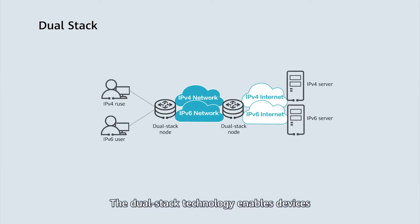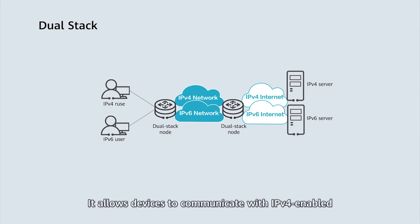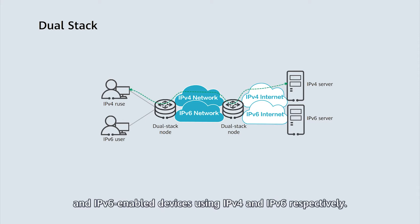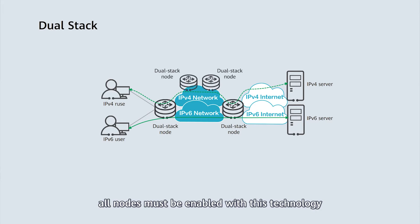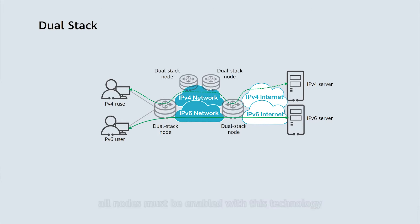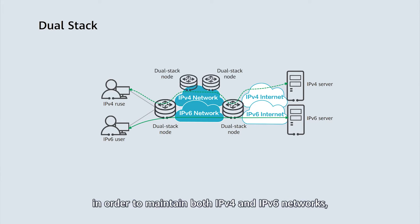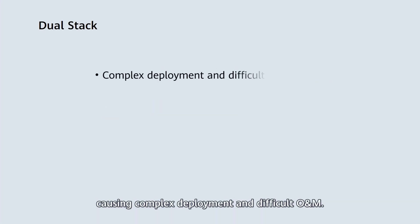The dual stack technology enables devices to run both IPv4 and IPv6 services. It allows devices to communicate with IPv4-enabled and IPv6-enabled devices using IPv4 and IPv6 respectively. However, if only the dual stack technology is used during IPv4 to IPv6 evolution, all nodes must be enabled with this technology in order to maintain both networks, causing complex deployment and difficult operation and maintenance.